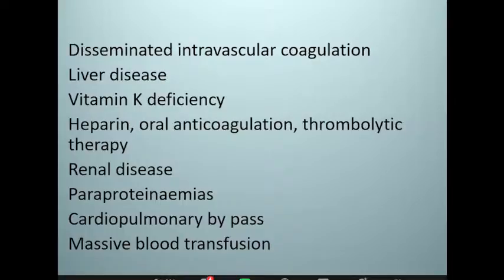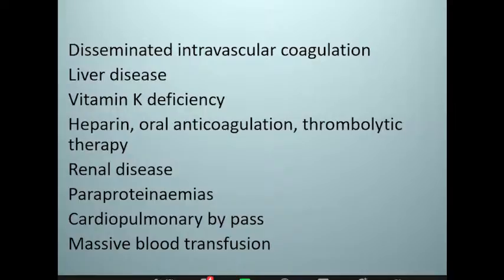Drugs are also important — drugs used as anticoagulants like heparin, warfarin, and other therapeutic agents used to dissolve clots. That's thrombolytic therapy, principally used when we have acute myocardial infarction or stroke. In certain diseases, such as paraproteinemias and in patients on cardiopulmonary bypass, and also in patients with severe trauma or following transplants where there is massive blood loss and we are replacing the blood volume, the coagulation factors get diluted, and as a consequence they may present with a coagulopathy.